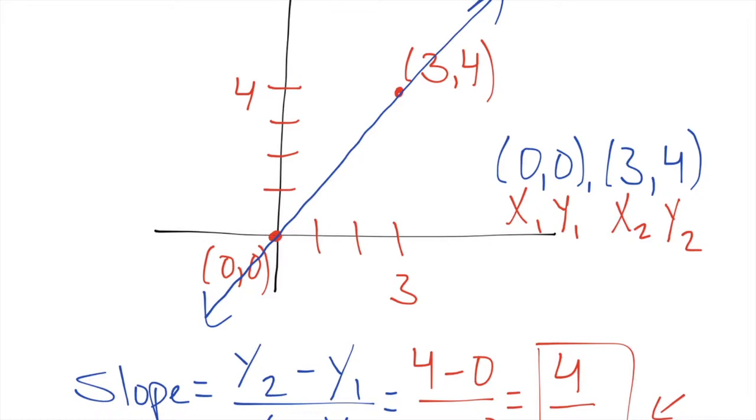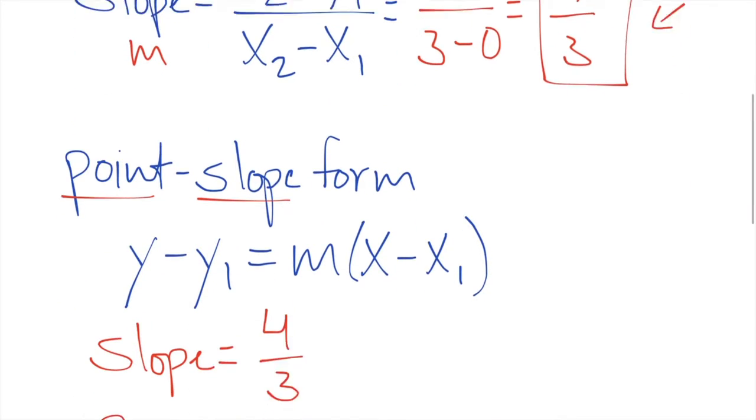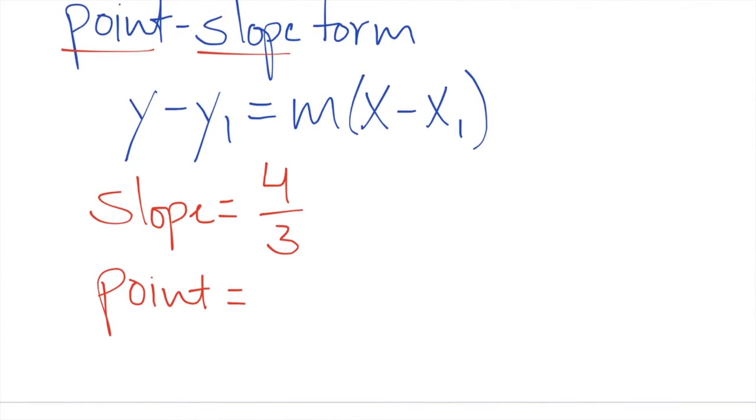So you have two points here, you have (0,0) and you have (3,4). You could pick any of the two points in order to plug into your equation, your formula. I personally would pick (0,0) because it's really easy, but you can pick (3,4) if you want to challenge. (0,0).